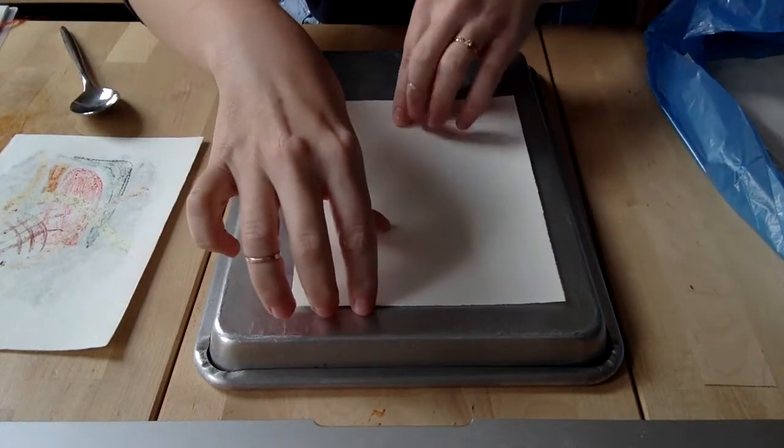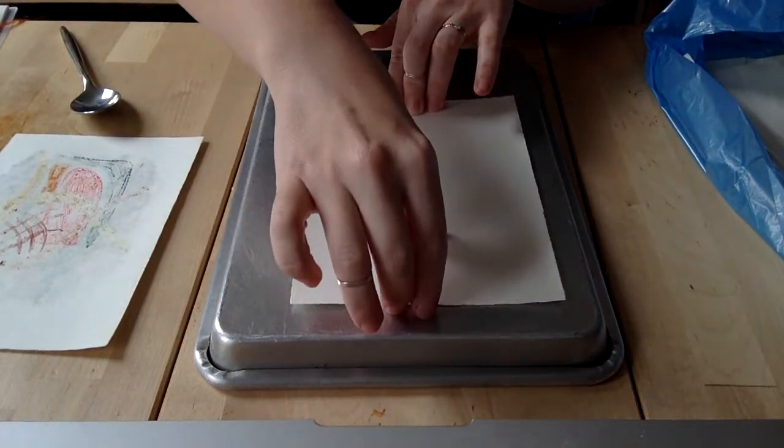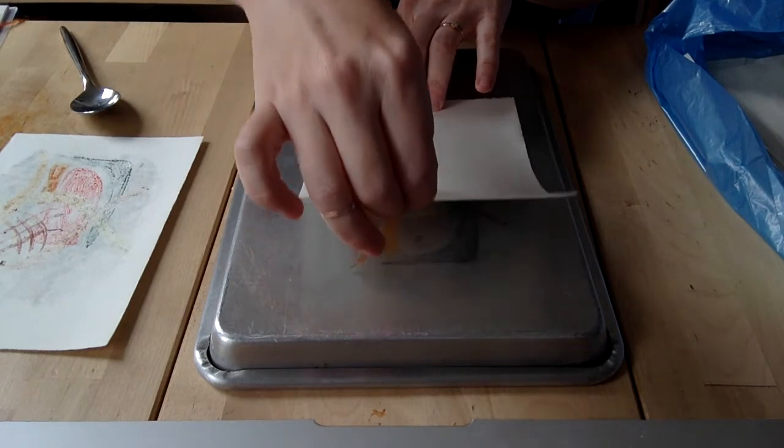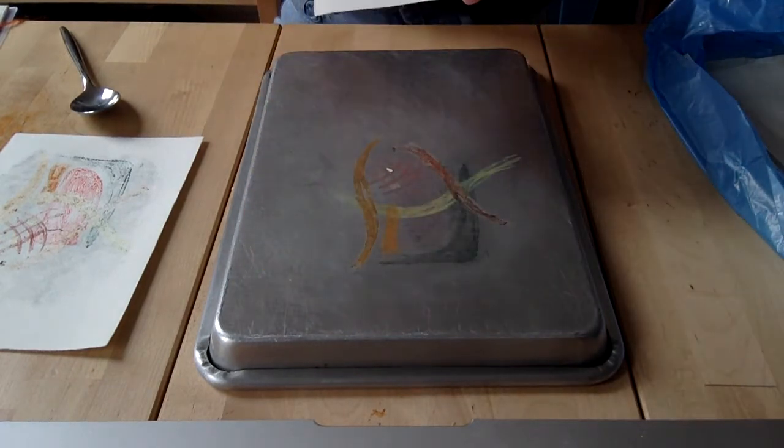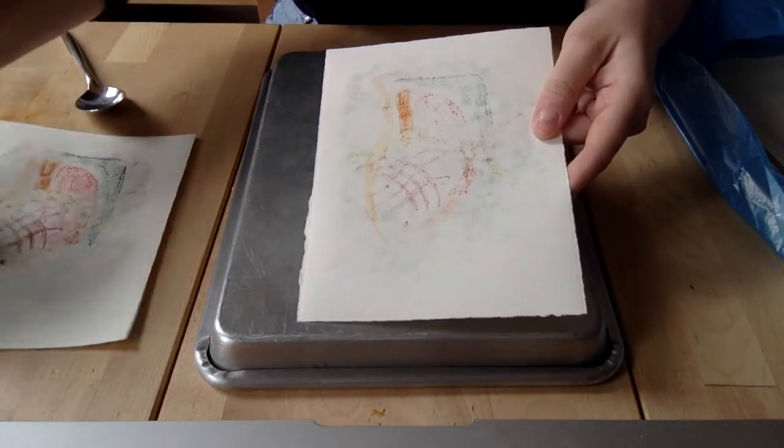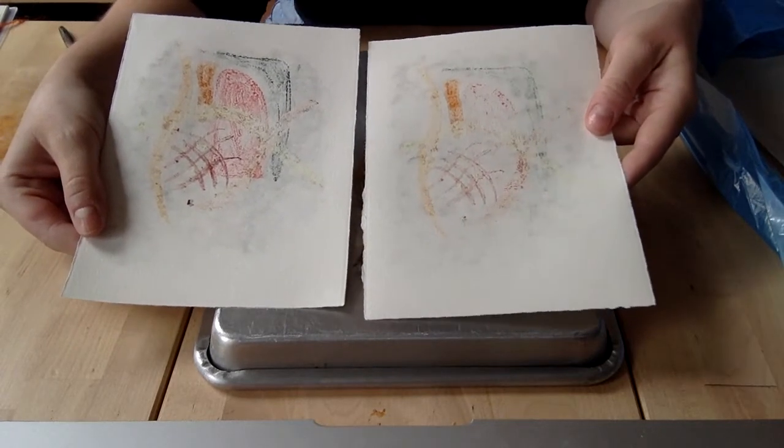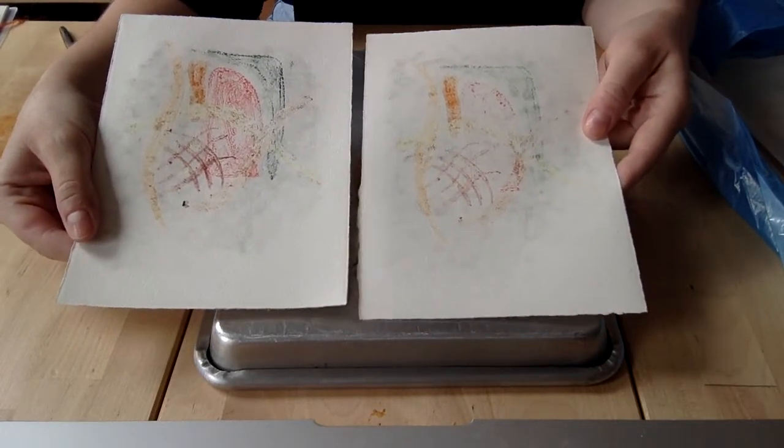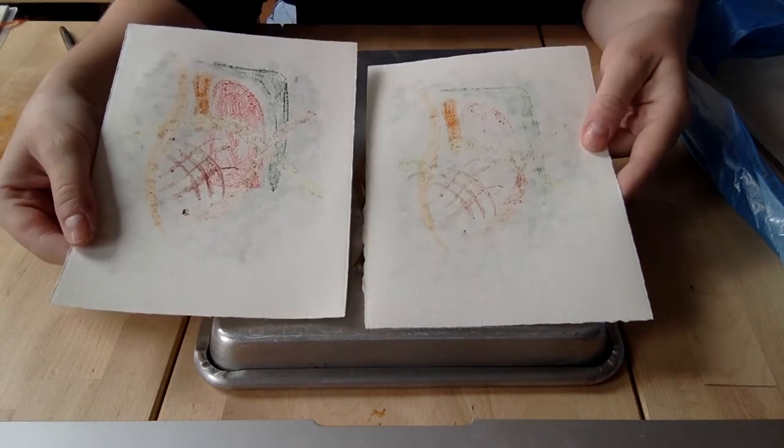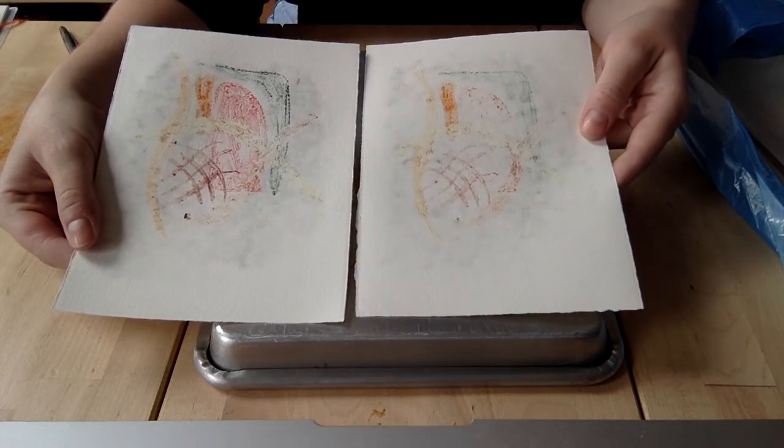So now I'm going to lift, holding down at one end and pulling up from the other gently. And you'll see that I have, in comparison to my original monoprint, a much lighter print. And that's called a ghost print. So you can see like a ghost of an image. It's less saturated, but you can still see those forms.